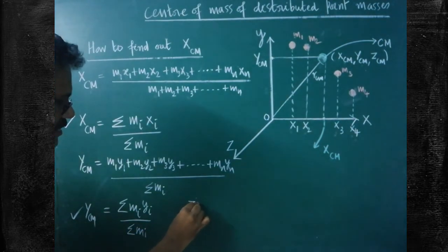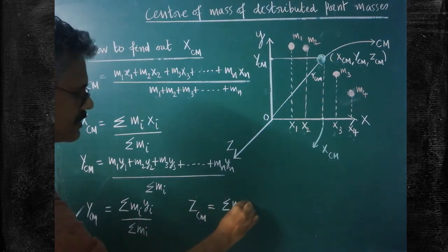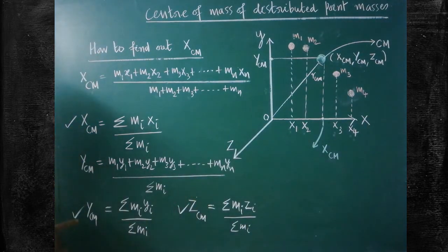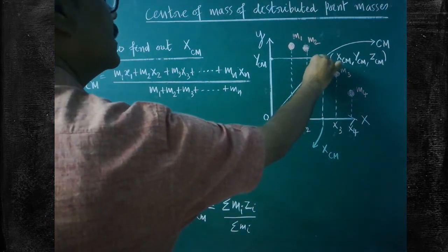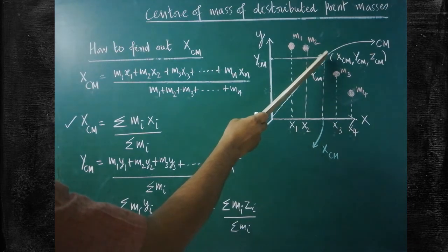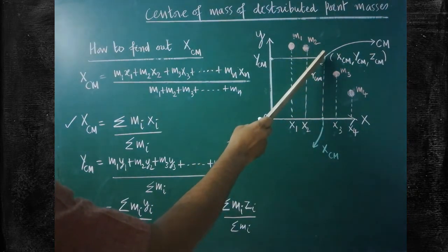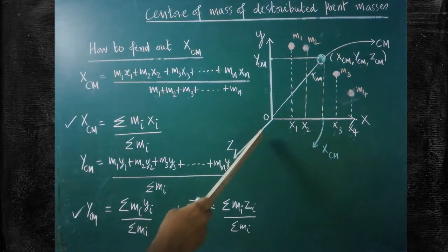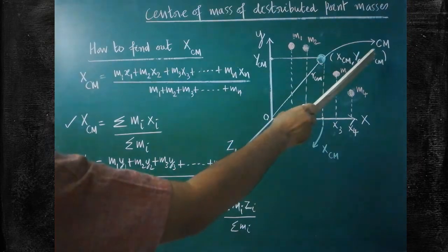Similarly, the expression for ZCM can be written as: ZCM equals sigma Mi Zi divided by sigma Mi. So we have three formulas — XCM, YCM, and ZCM — which give the three coordinates of the center of mass. Though the point masses are distributed in space, they all have one common center of mass, which lies approximately at the geometric center of all the masses. Its coordinates along X, Y, and Z directions are XCM, YCM, and ZCM respectively.